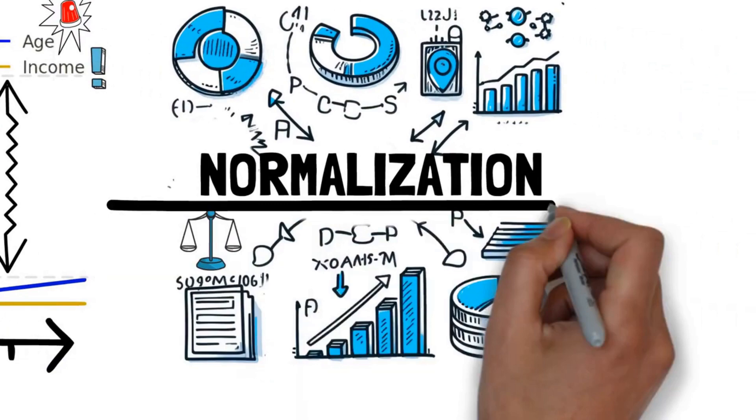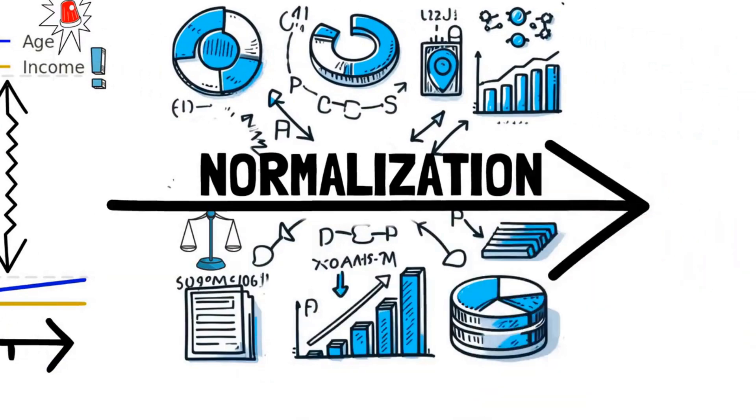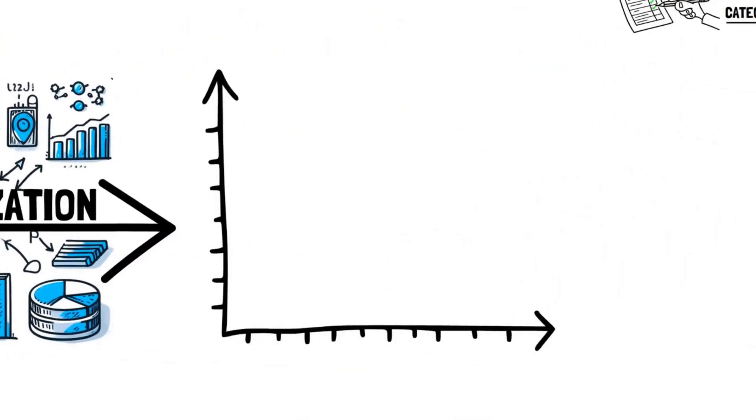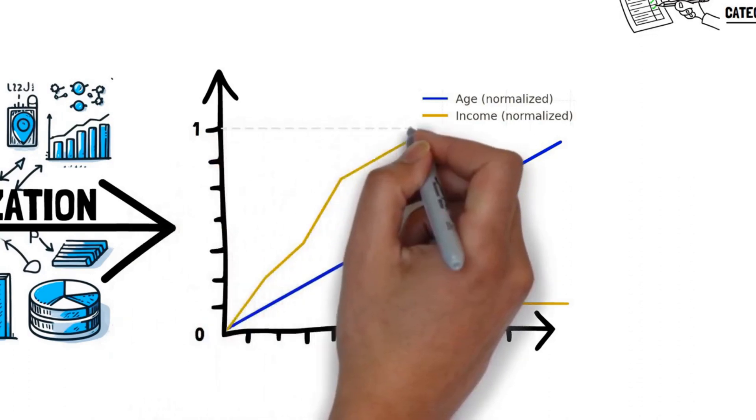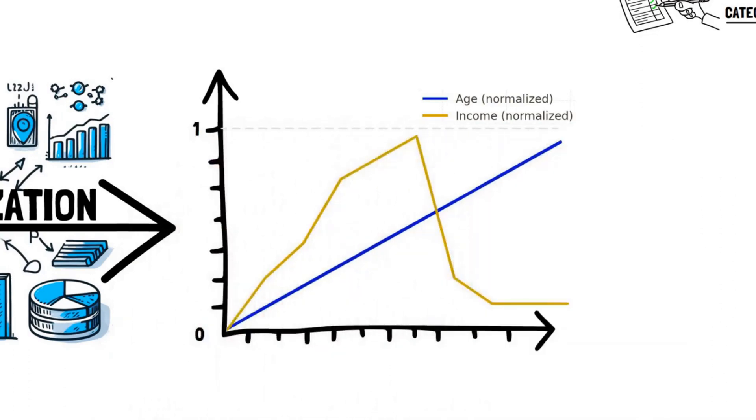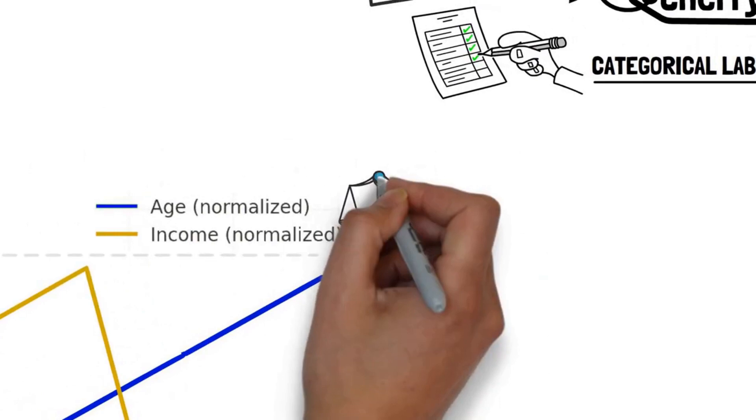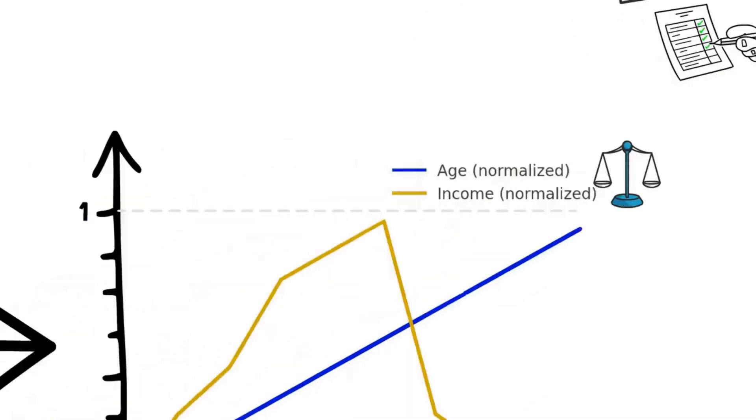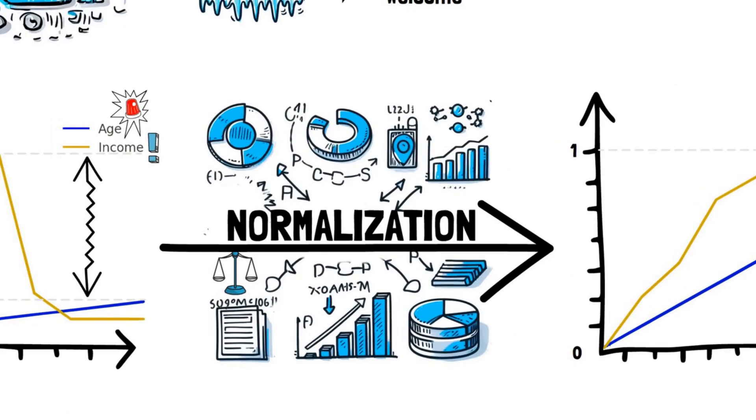By normalizing, we are essentially transforming our data so that all input features, regardless of their original scale, have a consistent range, often between 0 and 1 or a mean of 0 and a standard deviation of 1. This ensures that no particular feature dominates the learning process solely due to its larger magnitude.